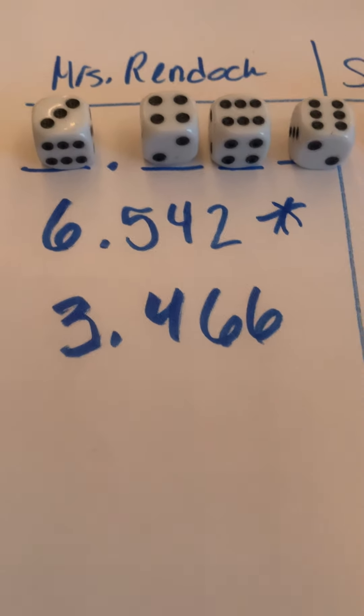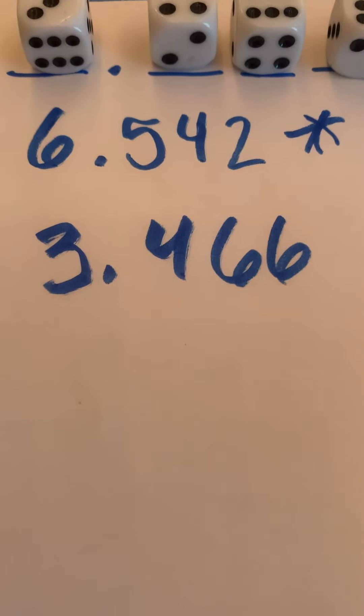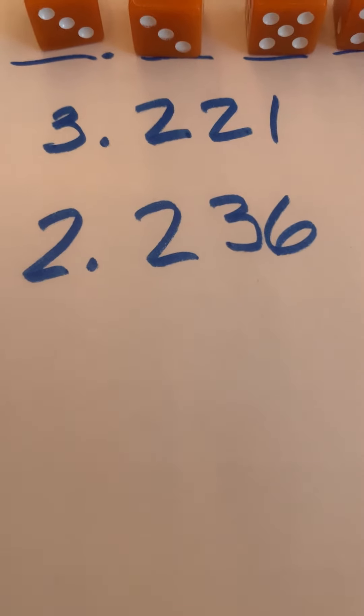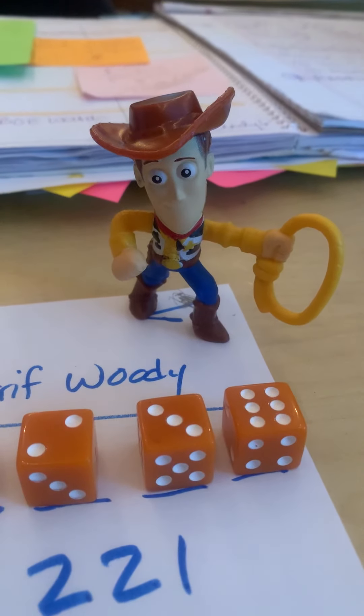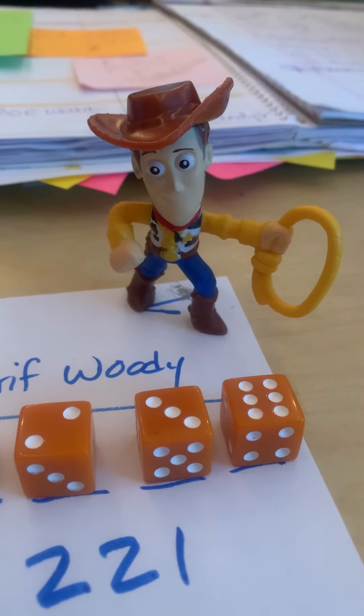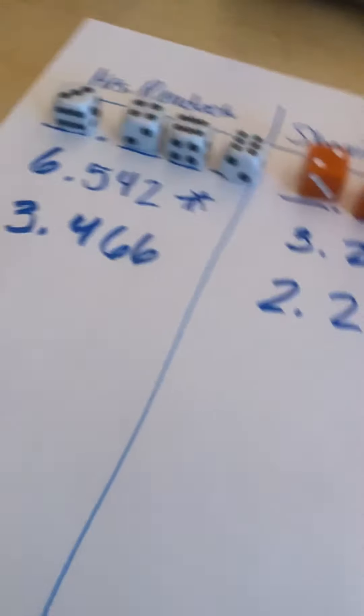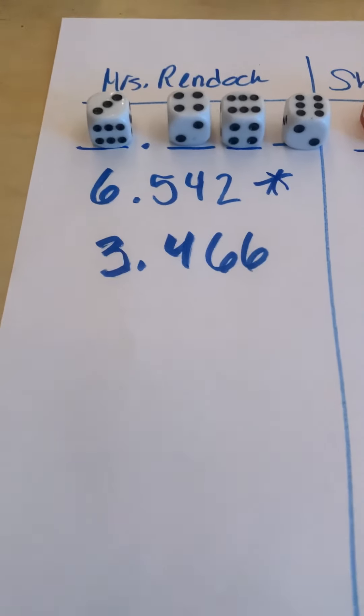Okay, now remember we're trying for the smallest decimal this time. So there's my decimal, three and four hundred sixty-six thousandths, and there's Sheriff Woody's decimal, two and two hundred thirty-six thousandths. So what do you think is the right one, Mr. Woody? Who got it this time? You did! Oh, let's see if the kids agree. Kids, do you agree? Oh, I just remembered—Sheriff Woody's decimal is smaller than mine.